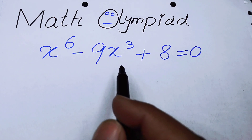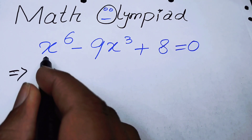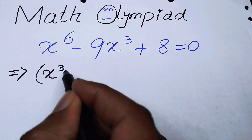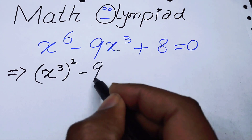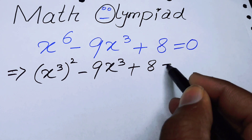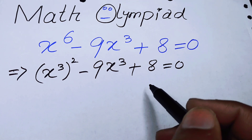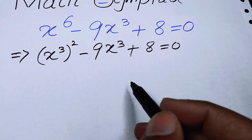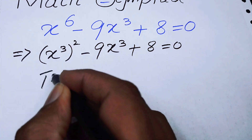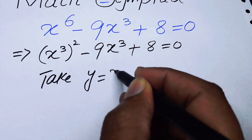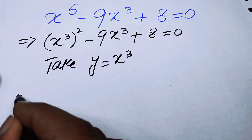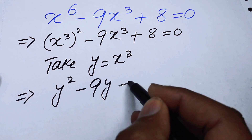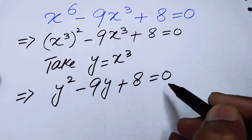The very first thing we are going to do is rewrite x to the power of 6 as x cubed squared, so the equation becomes x cubed squared minus 9x cubed plus 8 equals 0. We can simplify by taking y equal to x cubed, so this equation becomes a quadratic equation in y: y squared minus 9y plus 8 equals 0.